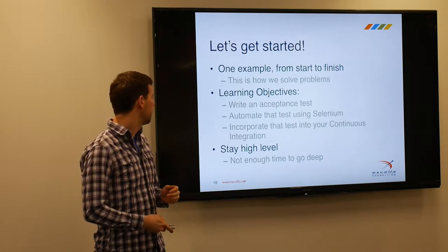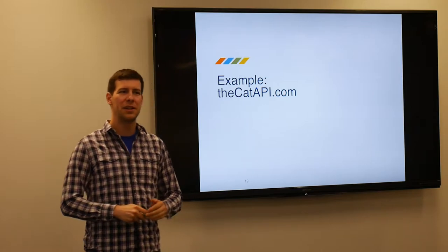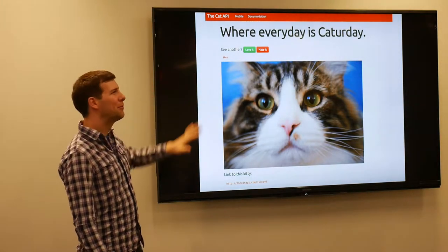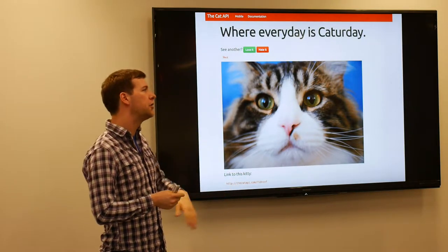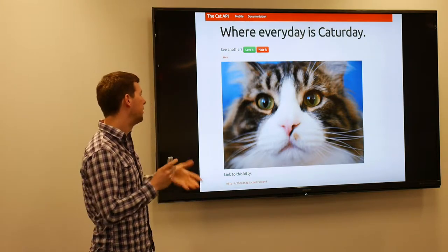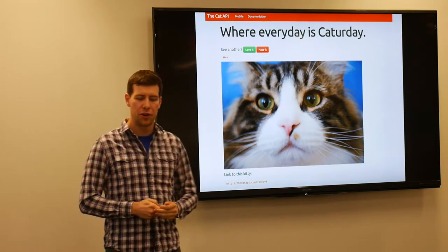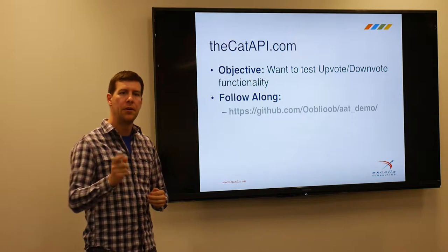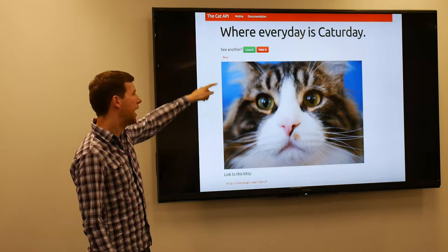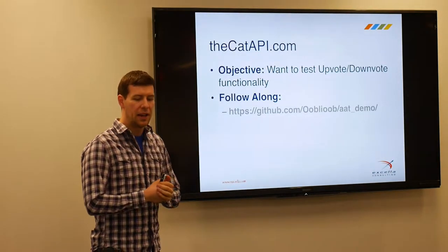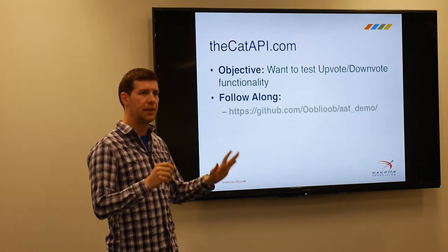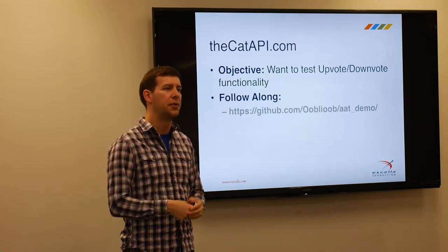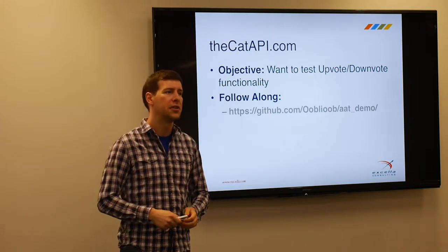Our example is a lovely website called the catapi.com. It's a website that has an API on the back end, and the idea is it shows you a random cat picture pulled from Tumblr. It has a couple of basic functionalities. Let's say we're charged with testing this website. Our objective for tonight: we want to test the upvote and downvote functionality — there's a 'love it' and a 'hate it' button on the page. I have a GitHub repository with all the code so don't worry about writing everything down.